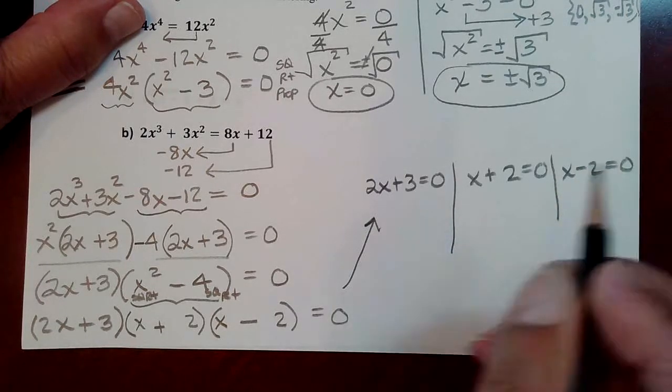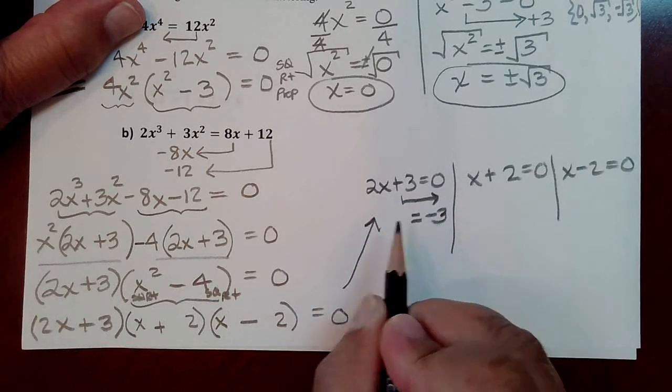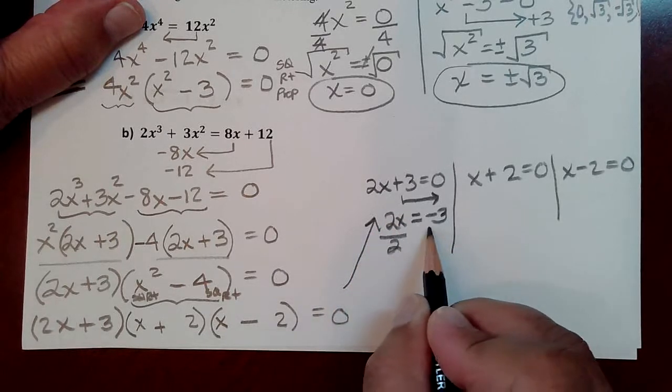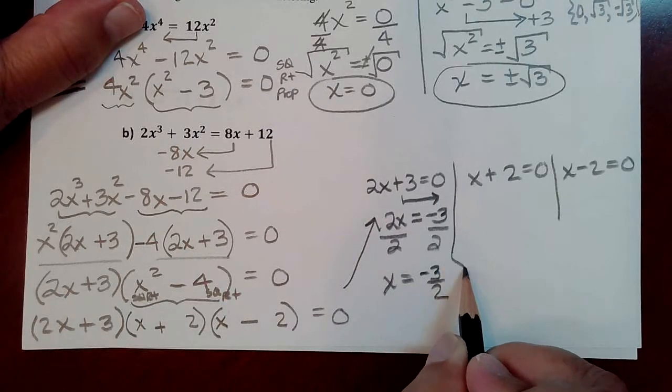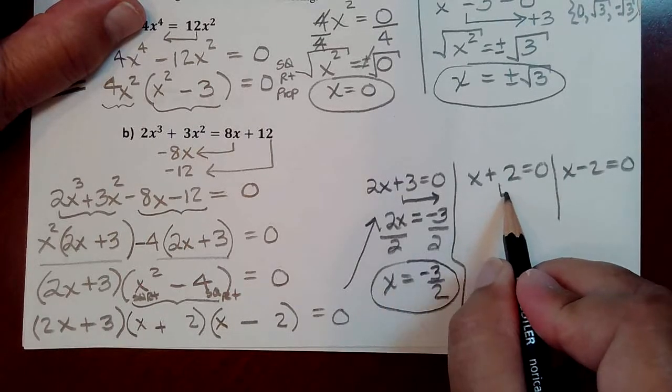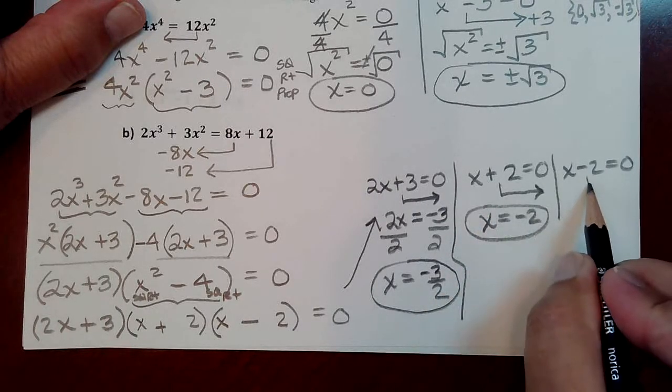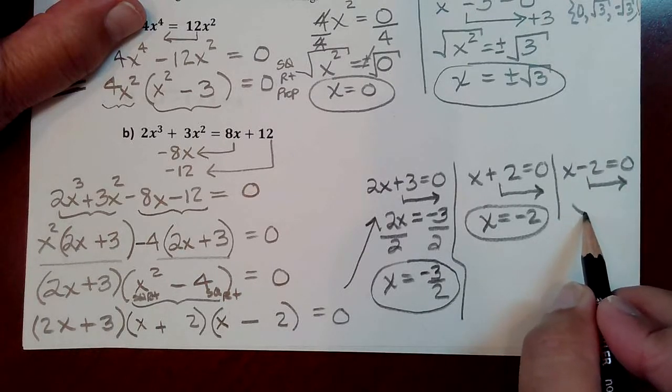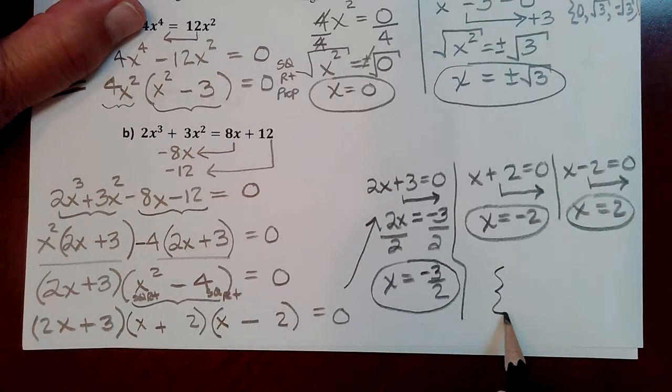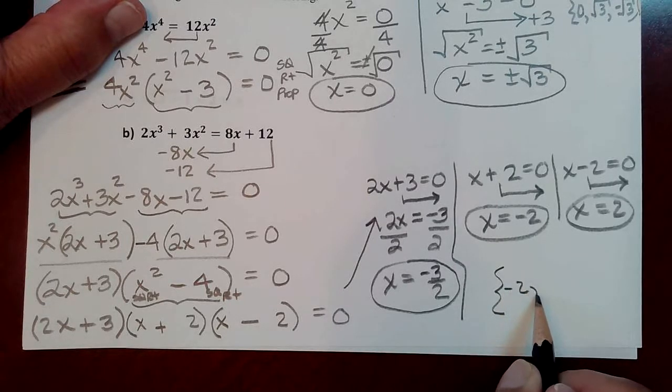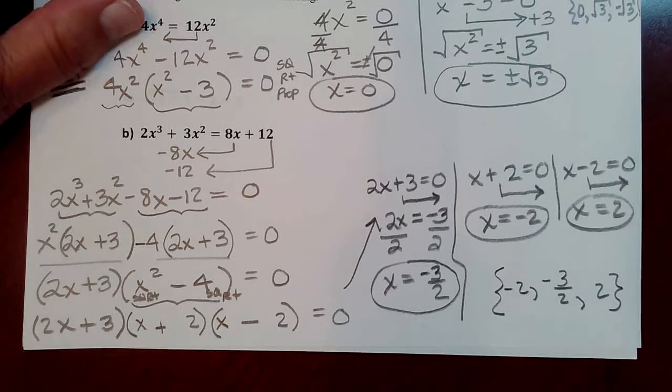So solving the first one, move the 3 over to the side where the 0 is. It'll become negative 3, while the 2x will remain here. Then I'm going to divide both sides by 2, and I get x = -3/2. Then here I'm going to move the positive 2 to the other side. That gets x = -2. Then I'm going to move the negative 2 in this one to the other side. And that gives you x = positive 2. And there you have your three solutions. You have negative 2 being the smallest one. Then you have negative 1 and a half. And then you also have positive 2, if you want to put them in a solution set.